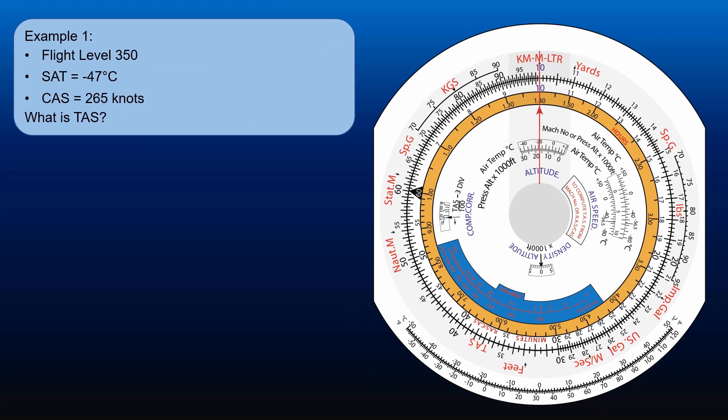We are at flight level 350, the static air temperature is minus 47 degrees Celsius, and the CAS is 265 knots. What is the true airspeed?